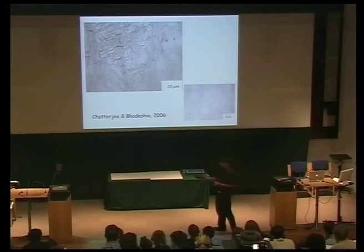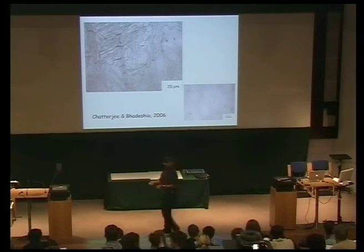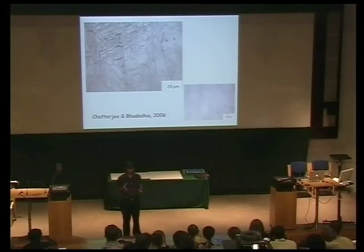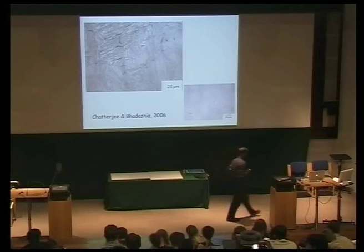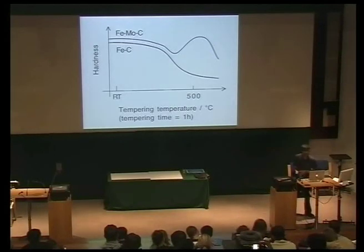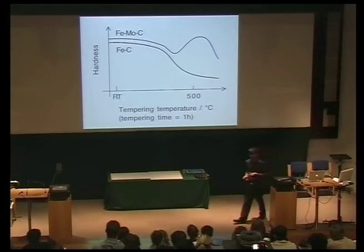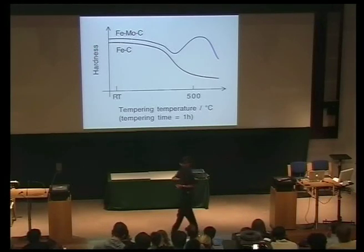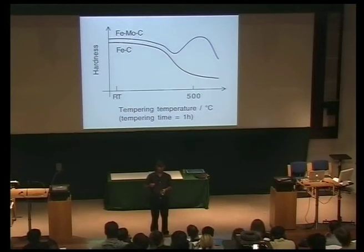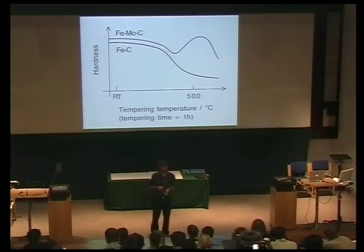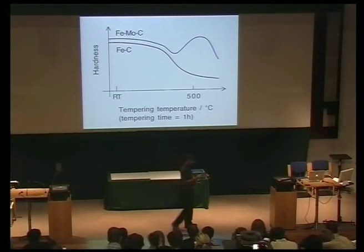What we do is first of all use a carbon concentration which doesn't lead to cracks but is still supersaturated. And then we temper the martensite to allow some of that carbon to precipitate as carbides. Tempering simply means that you heat treat the material — say at 200 degrees centigrade for an hour — so that the carbon has an opportunity to escape from the lattice of the martensite and form precipitates of cementite.